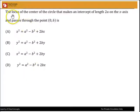Okay, we had a question about this. The locus of the center of a circle that makes an intercept of length 2a on the x-axis and passes through the point 0, b is, and we've got four options. So let's show how this can be solved.